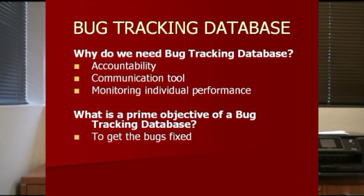What is the prime objective of a bug tracking system? To get bugs fixed. The primary objective of a bug tracking system is the same as the primary objective of a bug report — to have bugs fixed.